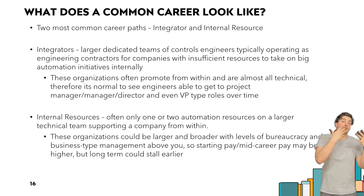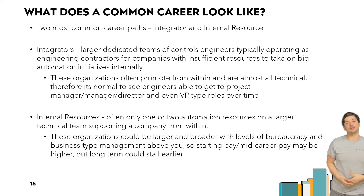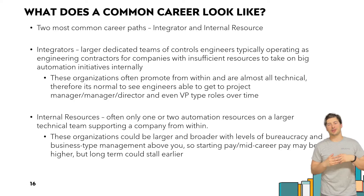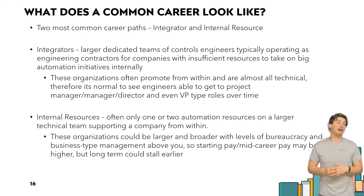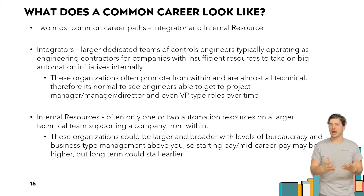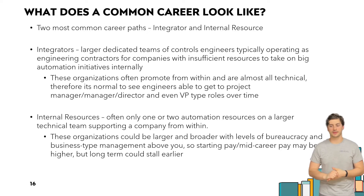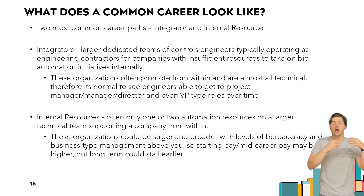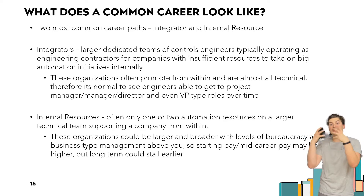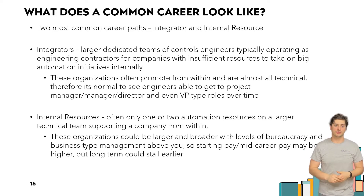Most places are looking for individuals with a four-year engineering degree for automation and controls engineering roles, but they're usually very open to what specific engineering discipline that is, and far more focused on finding driven and motivated individuals with some practical hands-on knowledge. The two most common types of controls and automation engineers are either an integrator or an internal resource to a company.